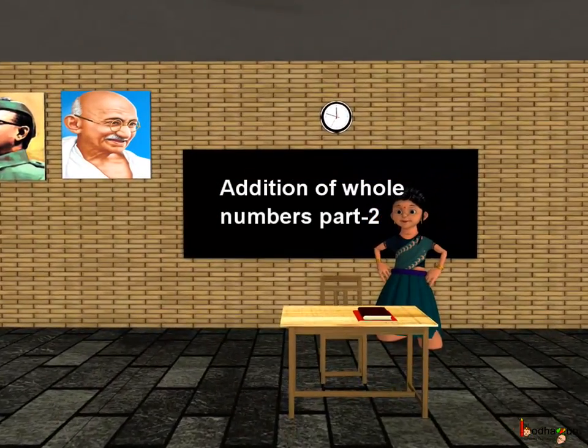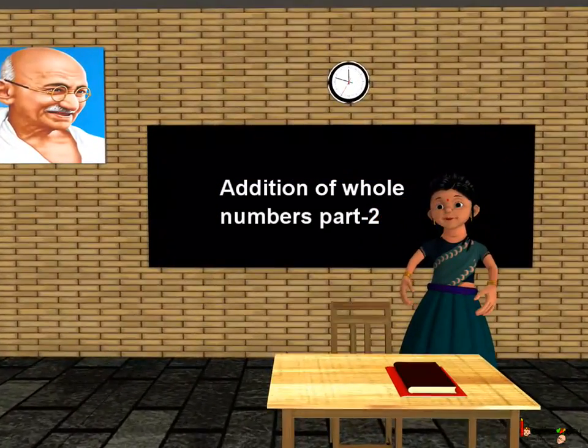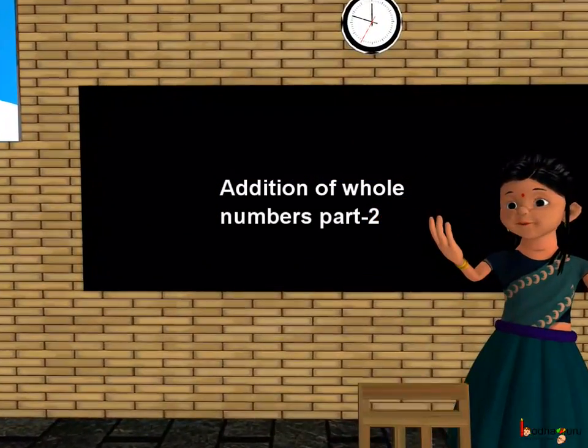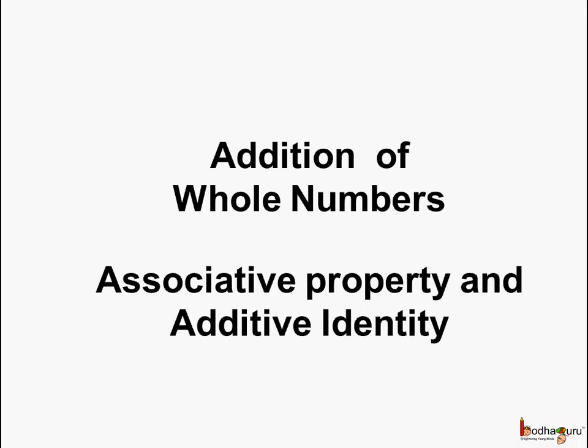Good morning children. In our last class we saw two properties related to addition of whole numbers: the closure property of addition and the commutative property. Now, let us see the other properties related to addition of whole numbers.